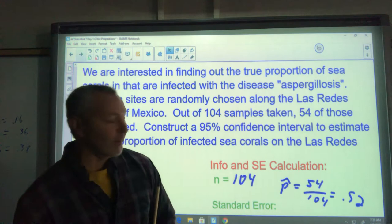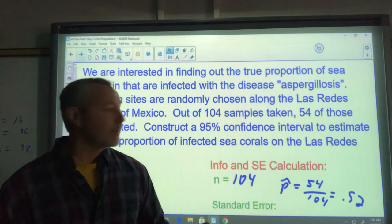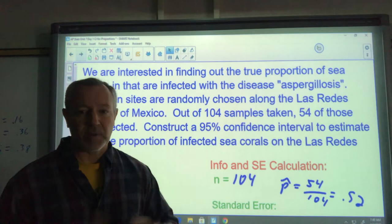If I did 104 different samples, I would definitely get a different answer than 54 most likely. I would have a different P hat then again. So I don't know the true proportion. That's the main thing that you need to understand with confidence intervals.